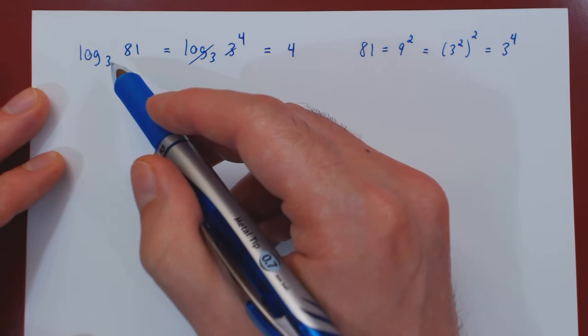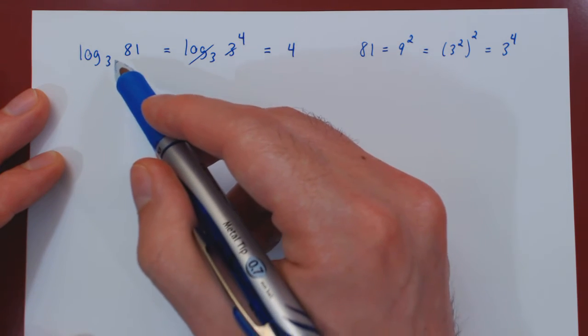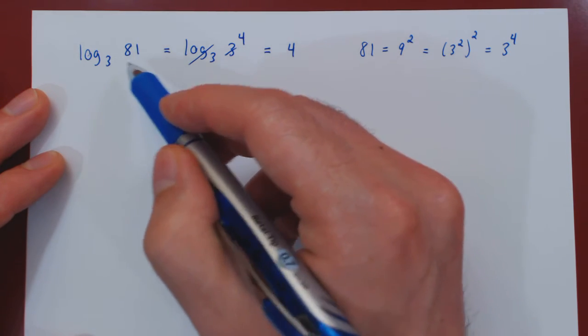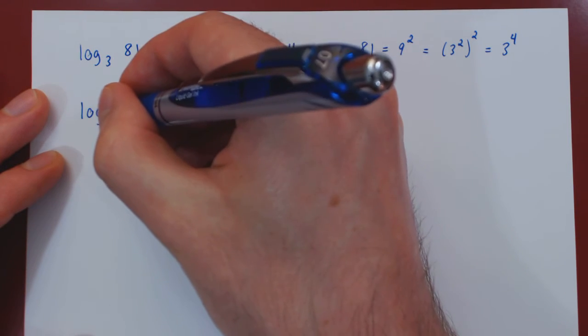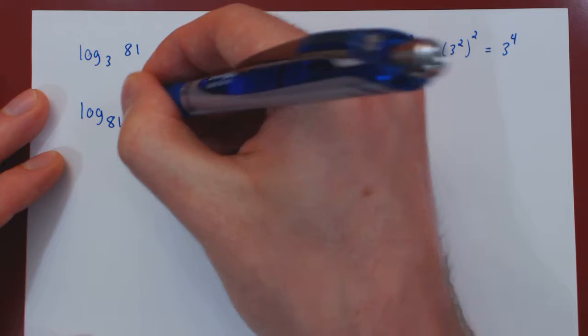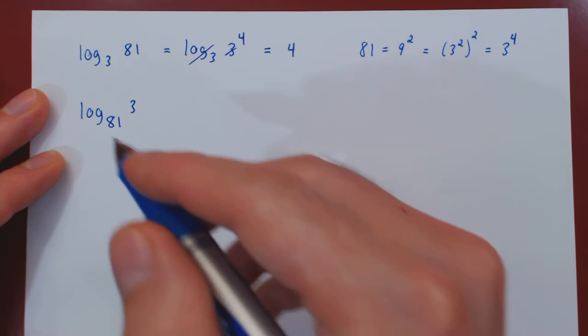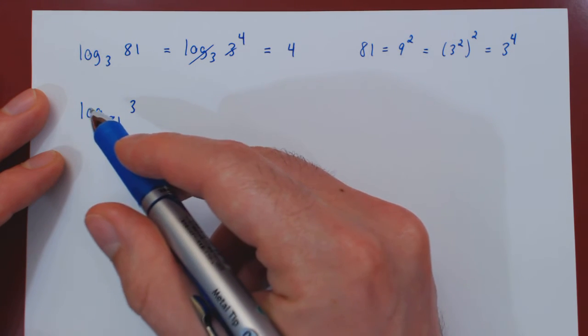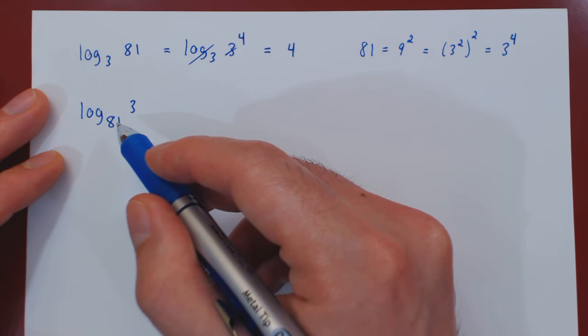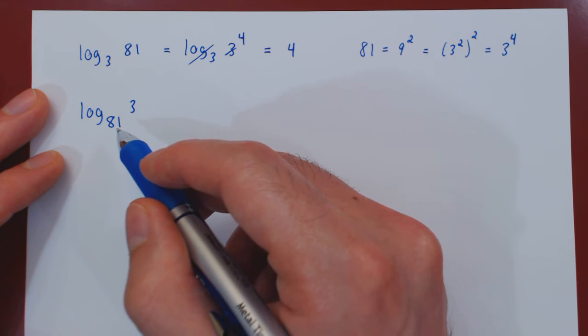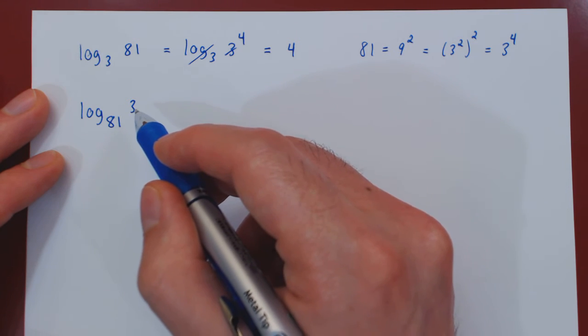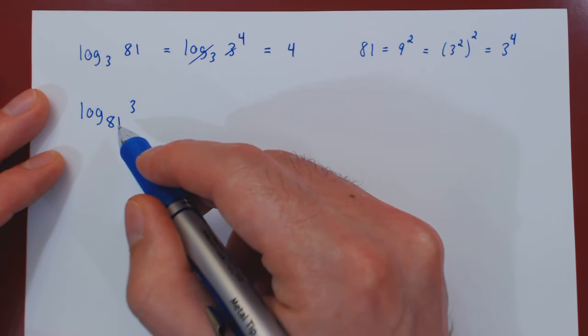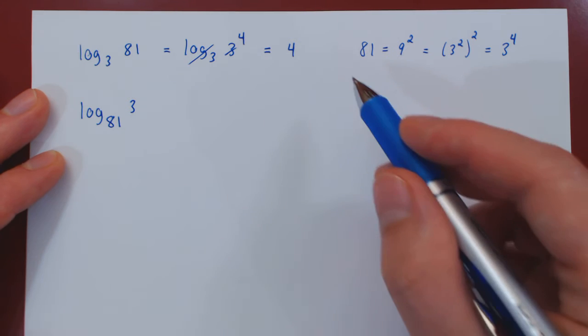Now you might wonder, what happens if we flip the base of the logarithm with the argument, and instead look at the logarithm base 81 of 3? So now we're looking at the logarithmic function base 81, which is the inverse function of the exponential function base 81. So the question becomes, can we express 3 as a power of 81?